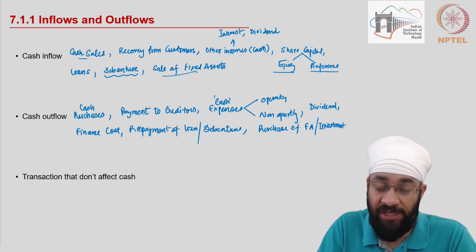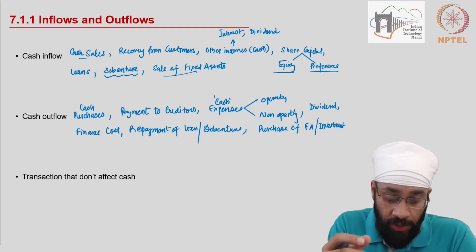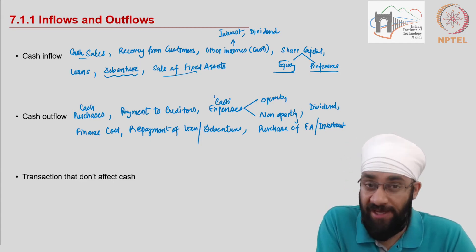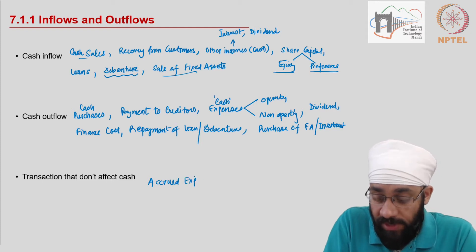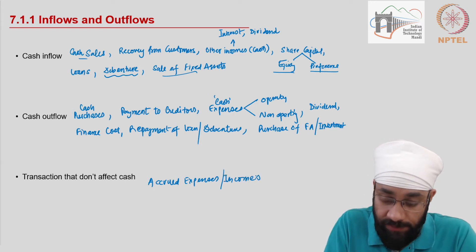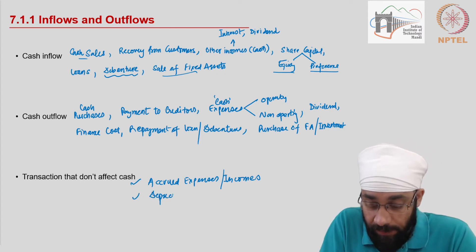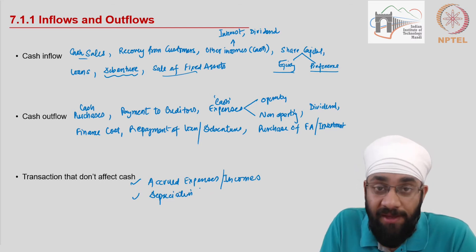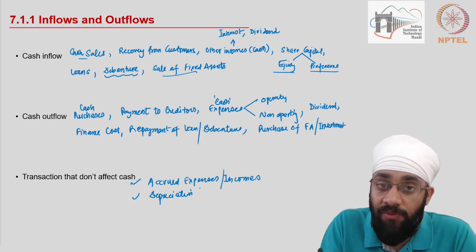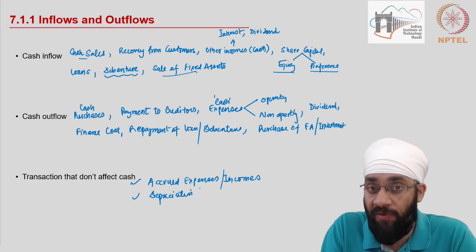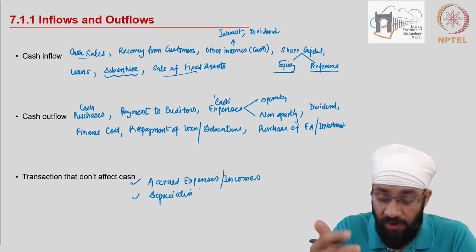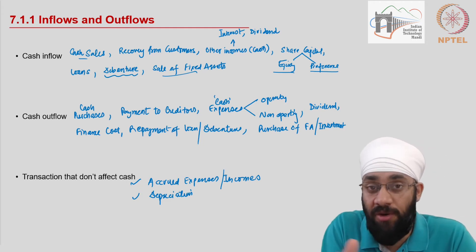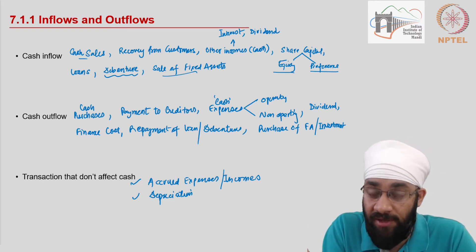So those are the items of cash outflow — transactions which affect cash immediately, not later on. Now, are there transactions which do not affect cash but we still record them? Yes — there are accrued expenses, outstanding expenses, accrued incomes, and transactions like depreciation. In depreciation, we do not pay any amount of money. We are just writing down the book value of a given asset. The journal entry for depreciation is: depreciation account debit to the asset account — cash account is not involved at all.